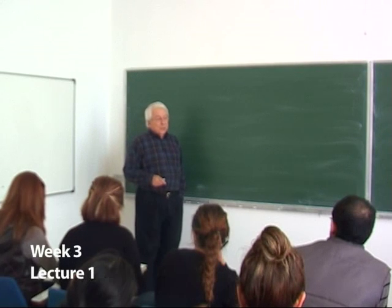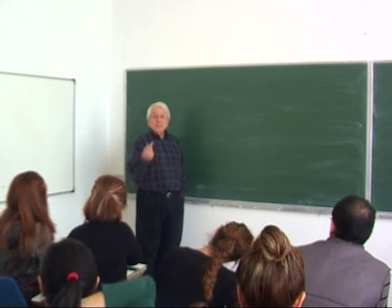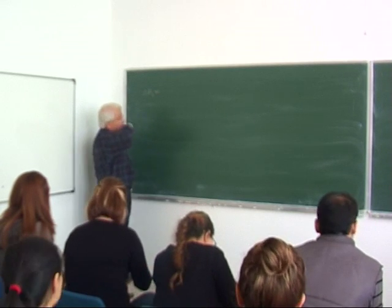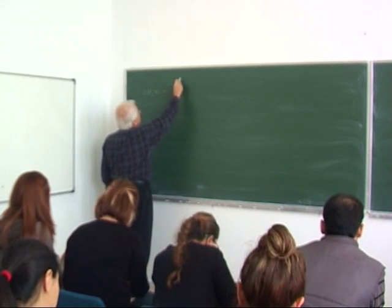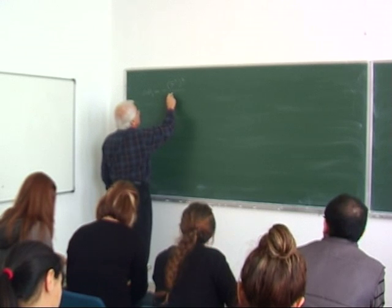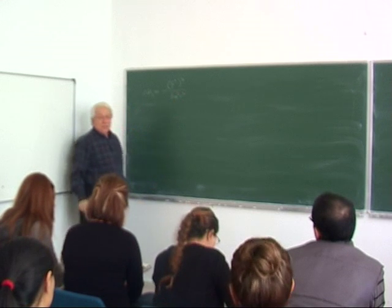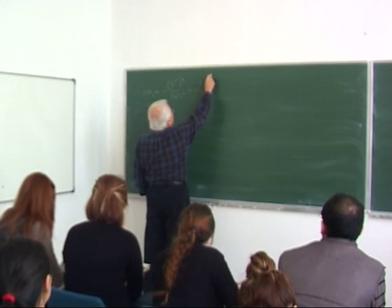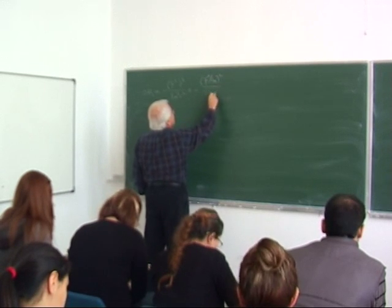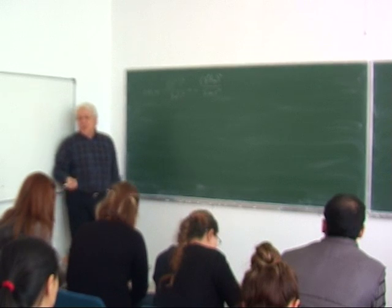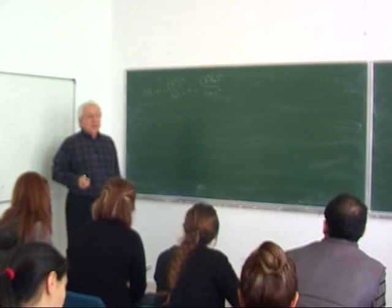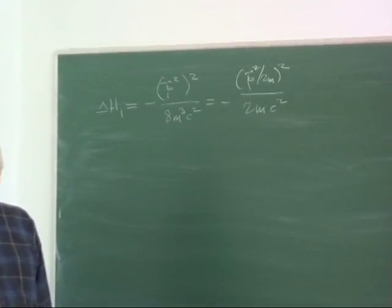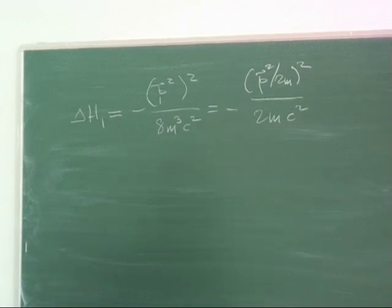We have started computing the contributions from the new relativistic correction terms. We are finished with the first one, p squared squared divided by 8m³c², which we rewrote as (p²/2m)² divided by 2mc². This form enabled us to compute it easily because the numerator is the kinetic energy squared divided by the rest mass energy — the dimension is energy, a good consistency check.